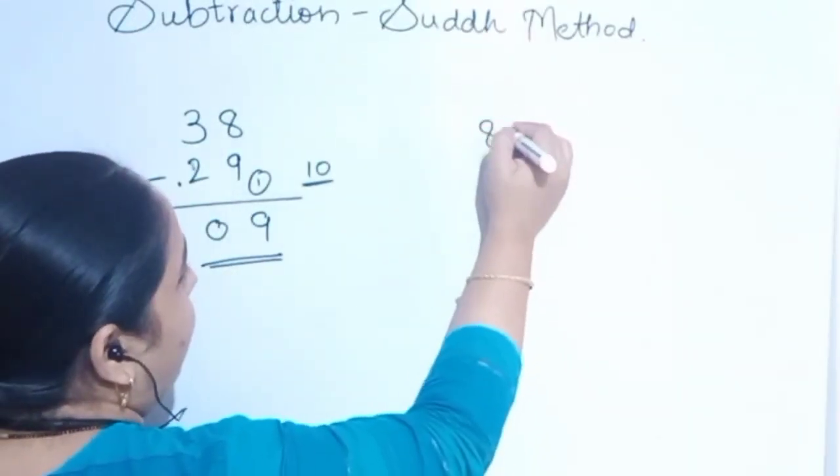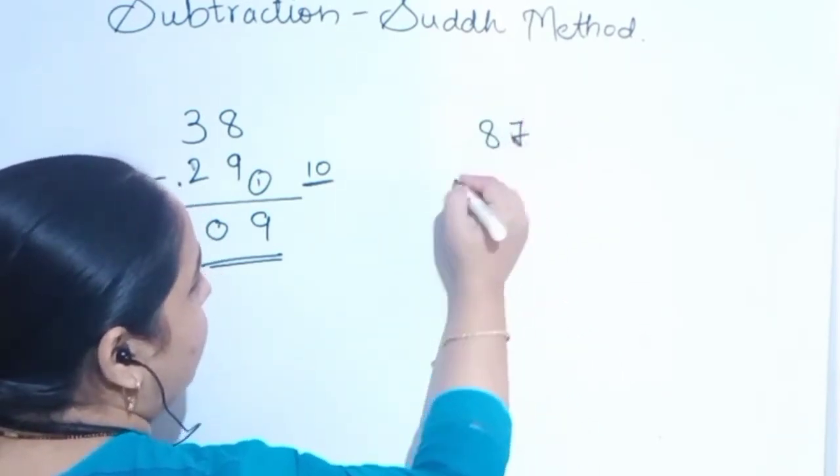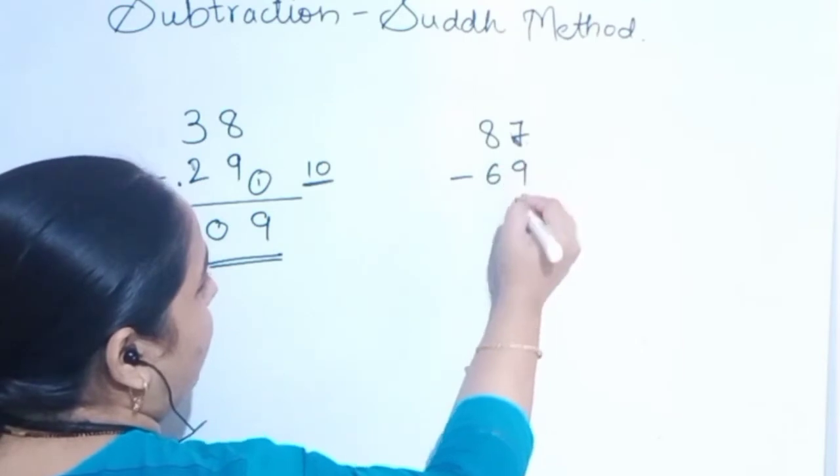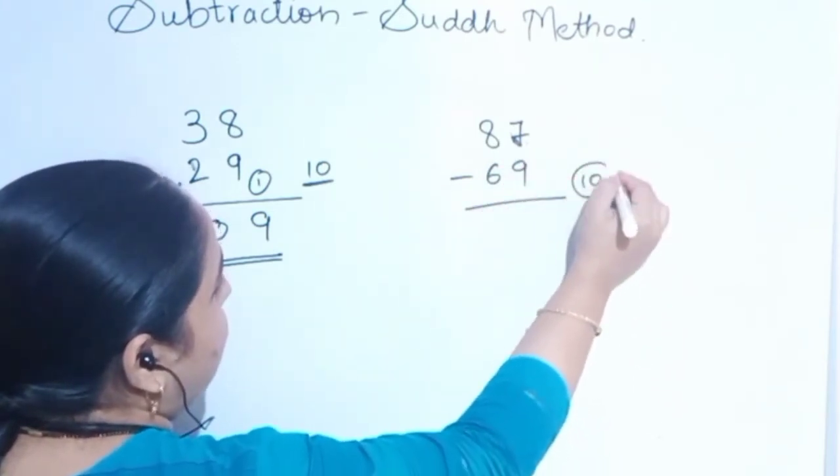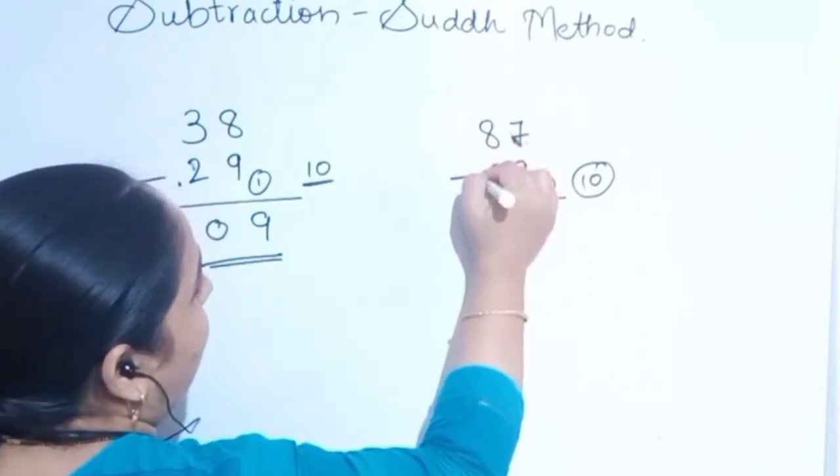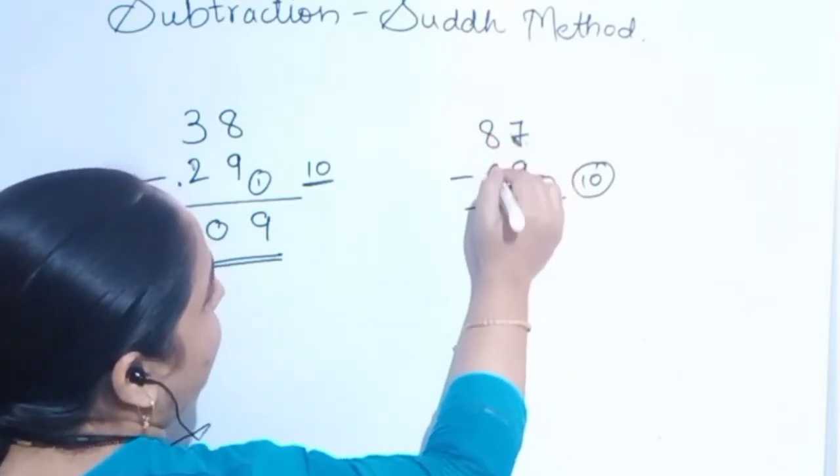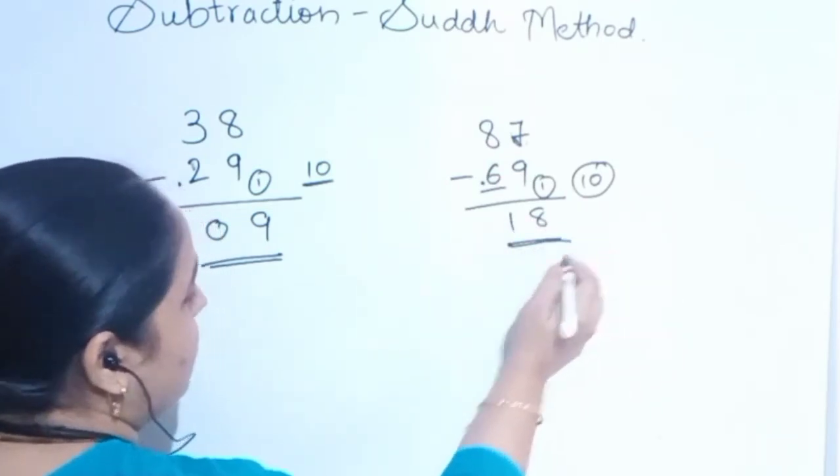Let us say it is 77 minus 69. Again 10 is the base, so 1. 7 plus 1 is 8, and here it is 1. It's 7, so 8 minus 7 is 1. This is the answer. We will solve again for 3 digits.